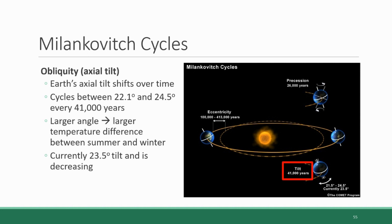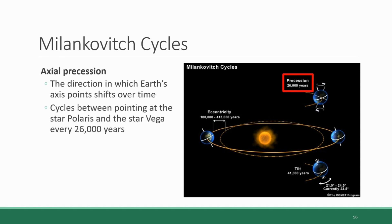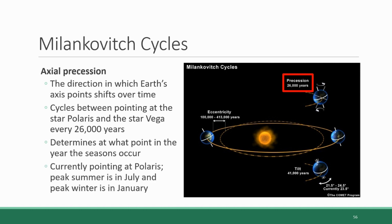The third and final characteristic is axial precession, which describes the direction in which the Earth's axis points. The direction that the axis points also changes over time, cycling between pointing at the star Polaris — also known as the North Star — and a star called Vega every 26,000 years. This directionality determines at what point during the year the seasons occur on Earth. Currently the axis is pointing at Polaris, meaning the peak of summer occurs in July and the peak of winter in January. If the axis were pointing toward Vega, this would be reversed.